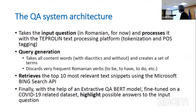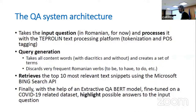The query generation will also discard very frequent Romanian verbs, because the Bing Search API will consider words like 'to be' or 'to have' as relevant, when in fact they are not. With this generated query, the pipeline calls the Bing Search API and retrieves the top 10 most relevant text snippets. The last step is to run an extractive QA BERT model over these text snippets and highlight the possible answer to the question.